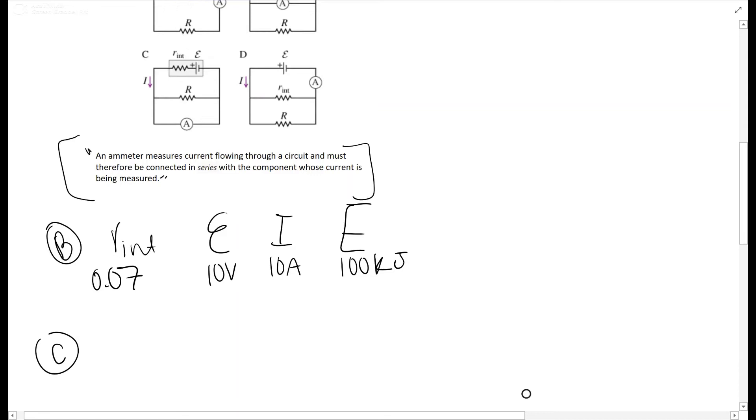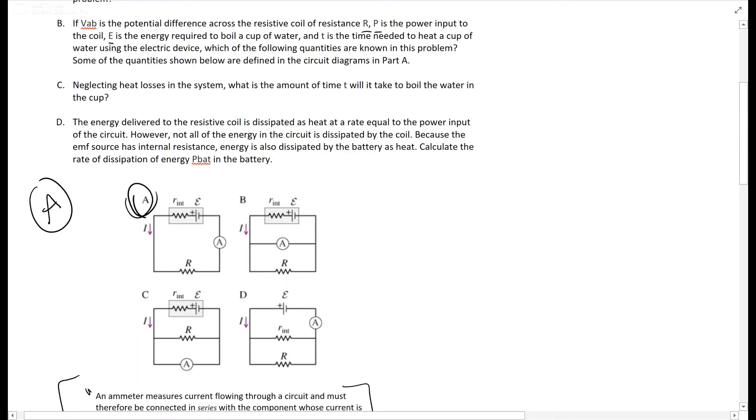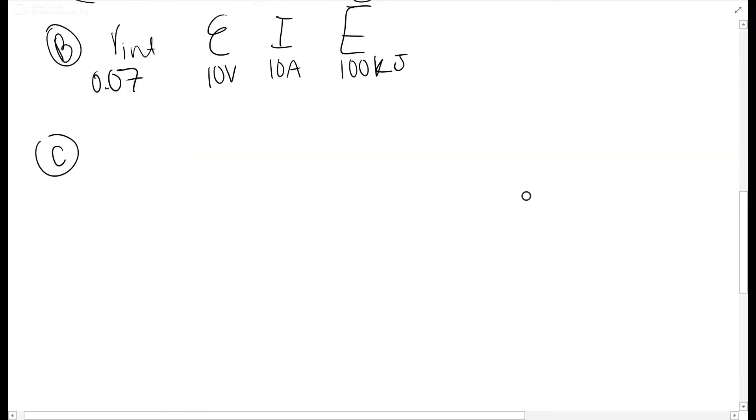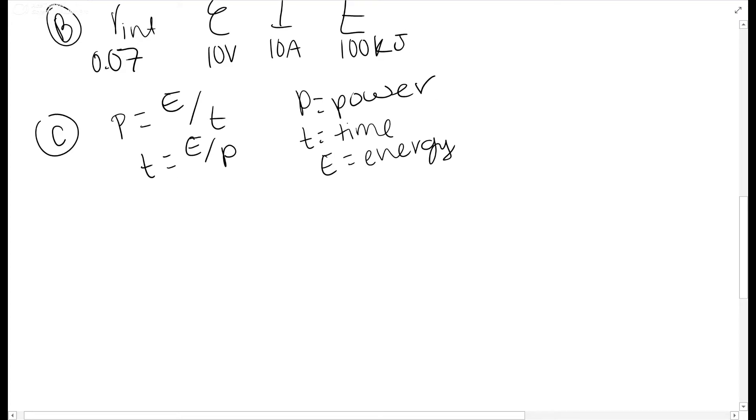Part C: Neglecting heat losses in the system, what is the amount of time T it will take to boil the water in the cup? We're going to use this equation P equals E over T. P in this case is power, not resistivity, because there are two Ps. T is time and E equals energy.